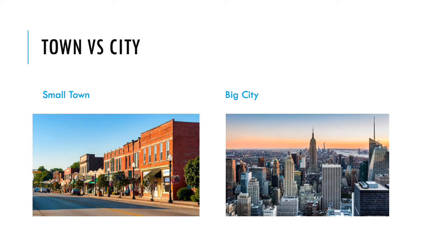To get into what all that means, I wanted to break down a few different kinds of settings and compare and contrast a little, talking about why particular settings might be good for certain kinds of stories. First I want to talk about town versus city — quaint, rural, small-town romances versus stories set in the city.